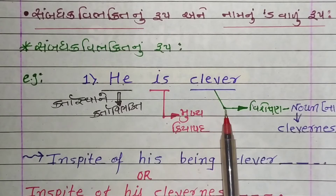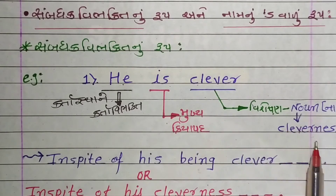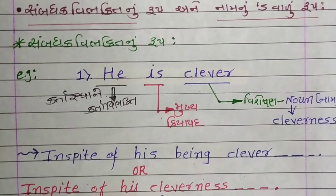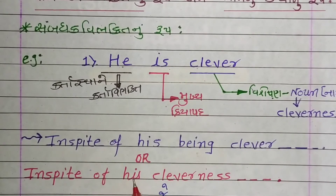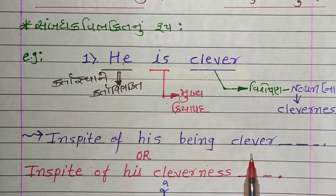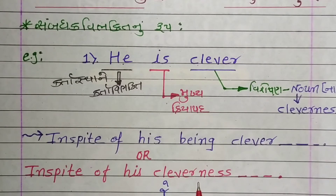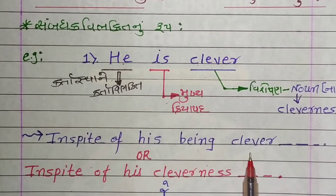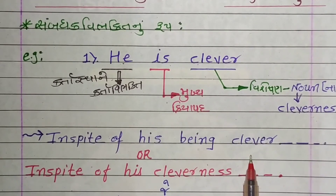Since 'clever' is an adjective whose noun is 'cleverness,' a second answer is also possible: 'In spite of his cleverness.' In the first answer, the 'being' method was used, so the adjective is placed after it. In the second answer, the noun 'cleverness' is used directly.